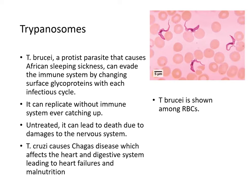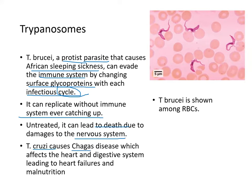Another protist pathogen is Trypanosoma brucei, a protist parasite that causes African sleeping sickness. It can evade the immune system by changing its surface glycoprotein with each infection cycle, replicating before the immune system can catch it. If untreated, this leads to death due to damage to the nervous system. Trypanosoma cruzi causes Chagas disease, which affects the heart and digestive system, leading to heart failure and malnutrition.